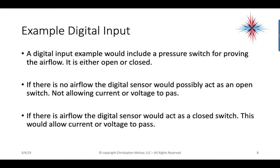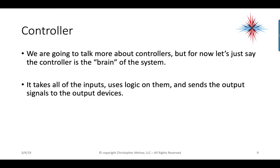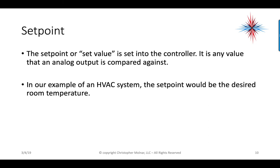It's either on or off, open or closed, true or false, 1 or 0. The controller — we're going to talk much more about controllers — but for now, the controller is the brain of the system. It acts as the computer that uses these inputs, applies logic and programming, and sends output signals to the output devices. There's always a set point — a set value stored in the controller, which is any value used with an analog output to compare against. In an HVAC system, the set point would be the desired room temperature.